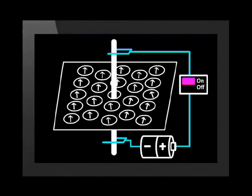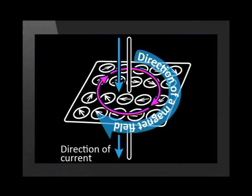Now, I am going to press the switch. Watch how the needles respond when I pass a current down the wire. The compass needles line up to show the shape and direction of the magnetic field around the wire.